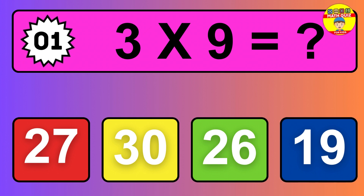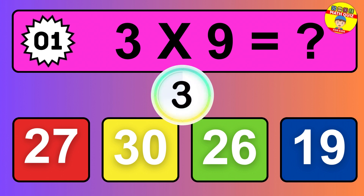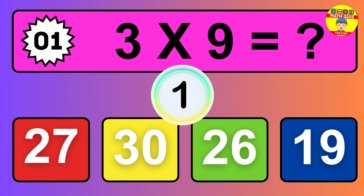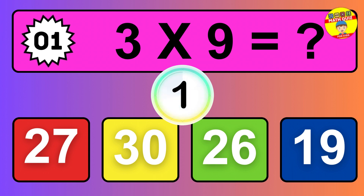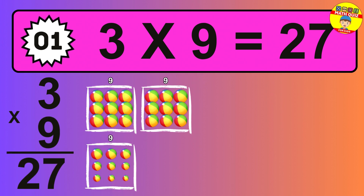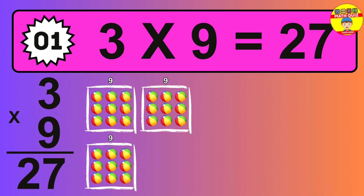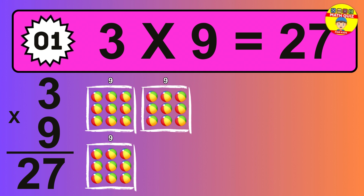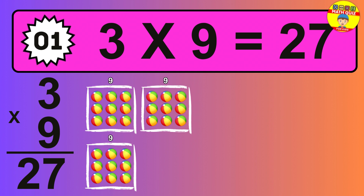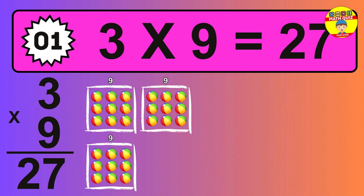Question one. Three times nine equals what? So the answer is three times nine is 27. To calculate, we have three groups with nine balls each one. So how many balls do we have? 27 balls.